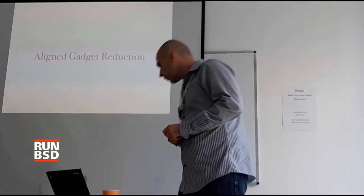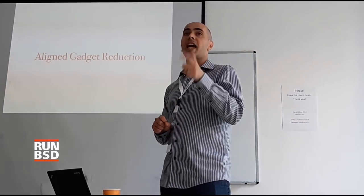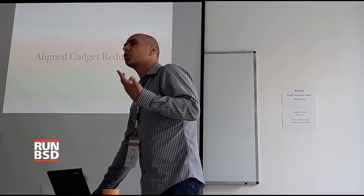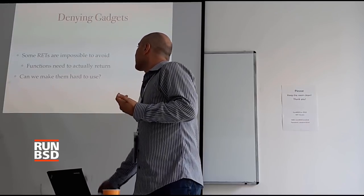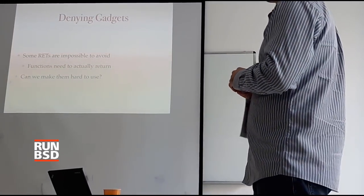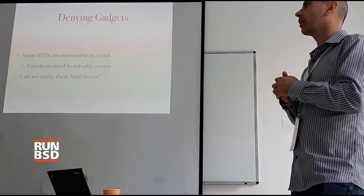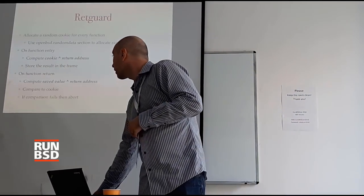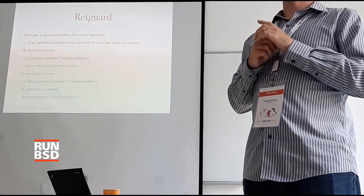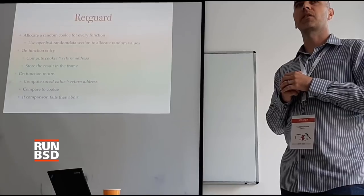Aligned gadget reduction. These are the ones where the return is intended — it's actually the return on a function or a return from the middle of a function. We can't avoid those returns because the function actually needs to return. Some returns are impossible to avoid because the program really needs to actually work. So we can't get rid of these RETs like we did with the polymorphic ones — return is return is return. Can we make them hard to use instead? That's what RectGuard is. RectGuard is something we've been working on for a while; it was committed last June. It's been in the AMD64 branch for a while now.